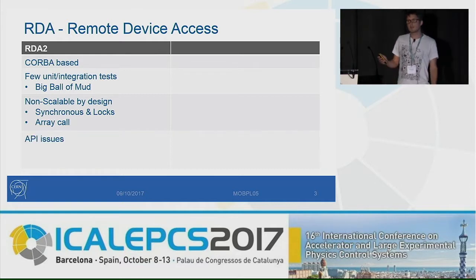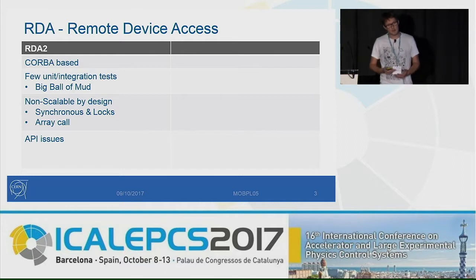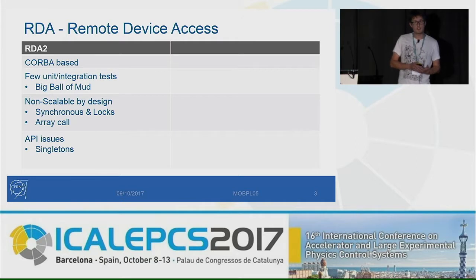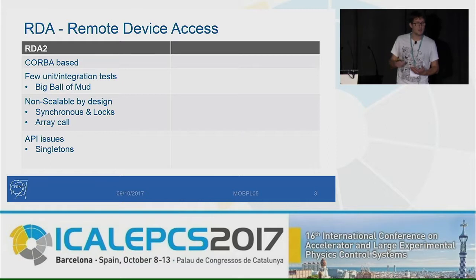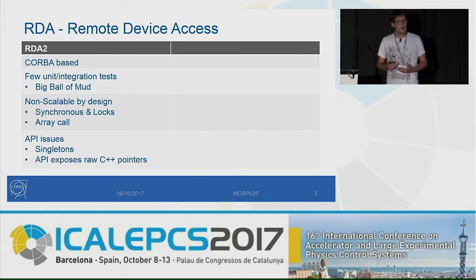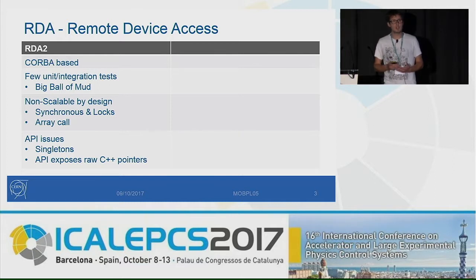The last problem was related to the API, and those problems we were not able to fix in a backward-compatible way. There were a lot of singletons, which also contributed to the problem of not having a lot of tests. And the C++ API was exposing raw pointers to the user, which led to unsafe code.